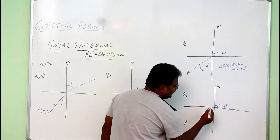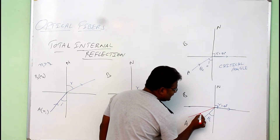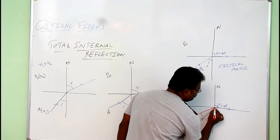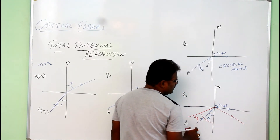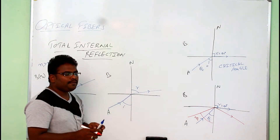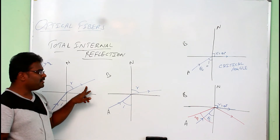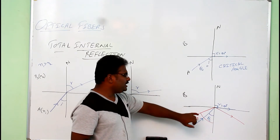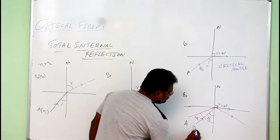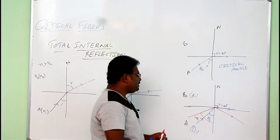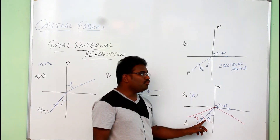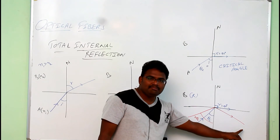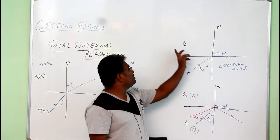If the angle of incidence is more than the critical angle theta c, then the light ray will move back into the same medium. This process is known as total internal reflection. When a light ray moves from one medium to another and bends, that is refraction. But in this situation, when light is moving from a denser medium at an angle greater than the critical angle, the light bends back into the same medium — and that is known as reflection.